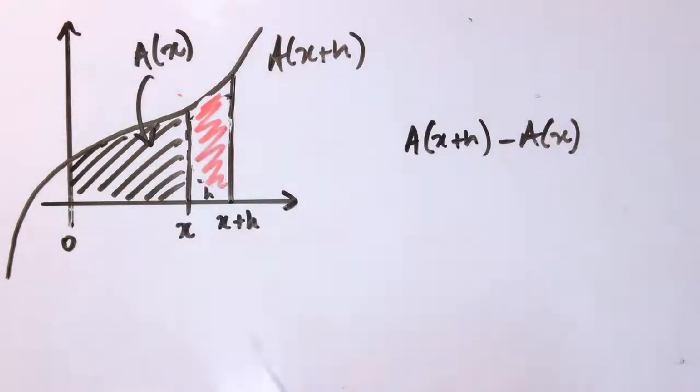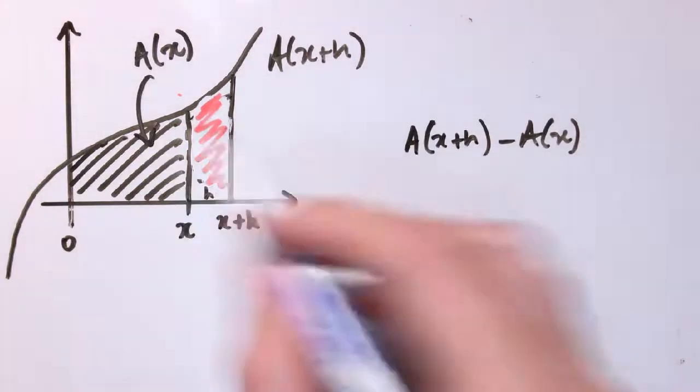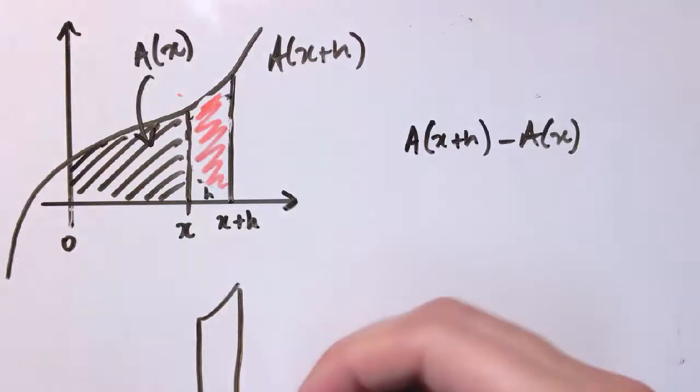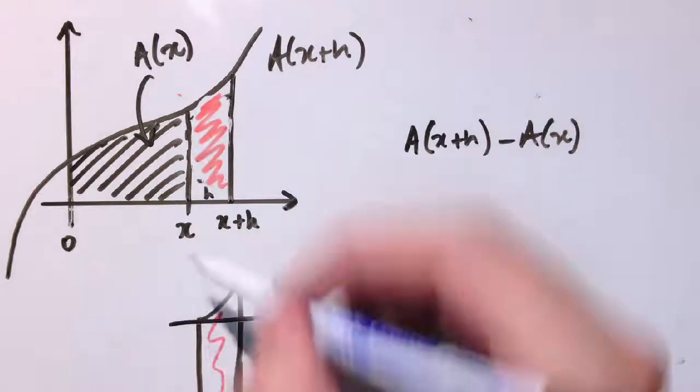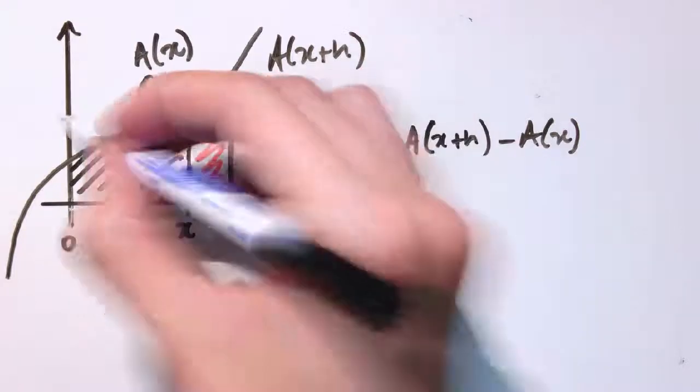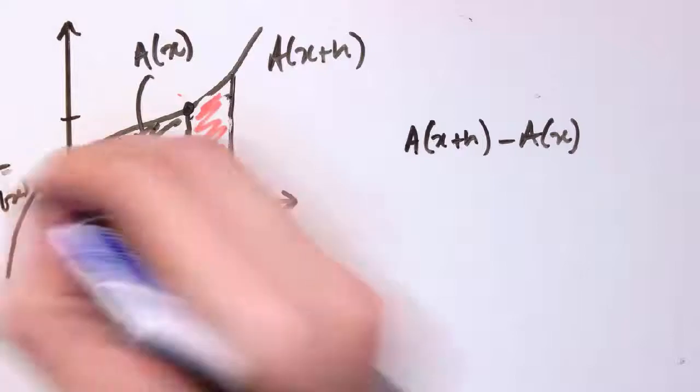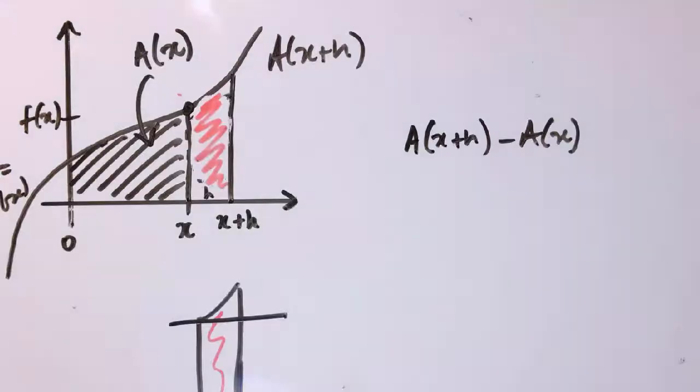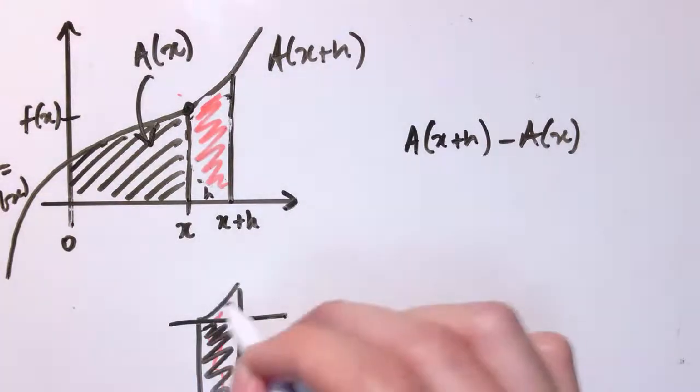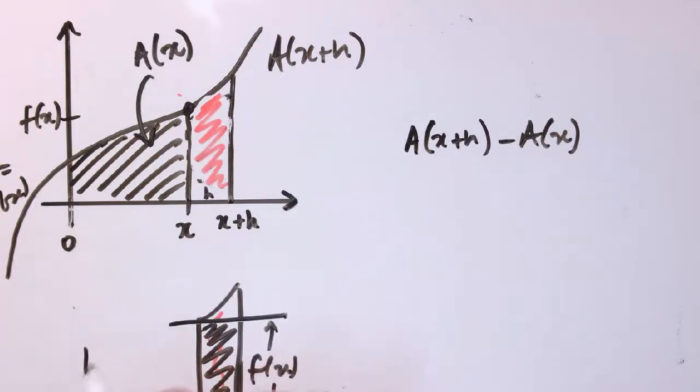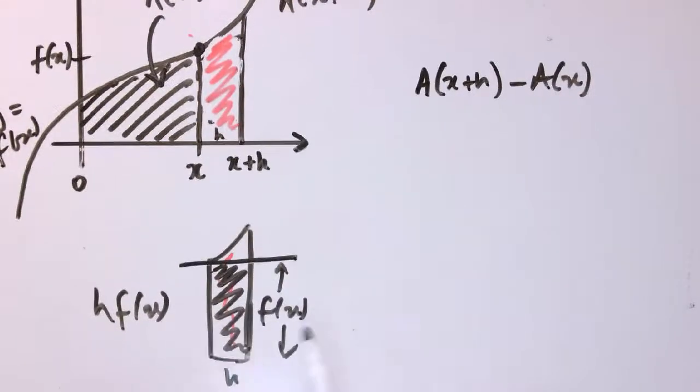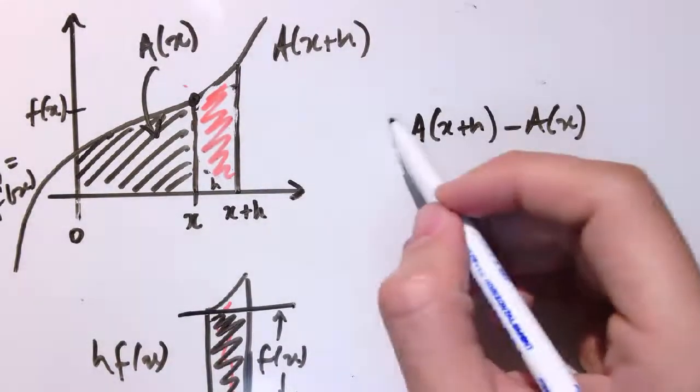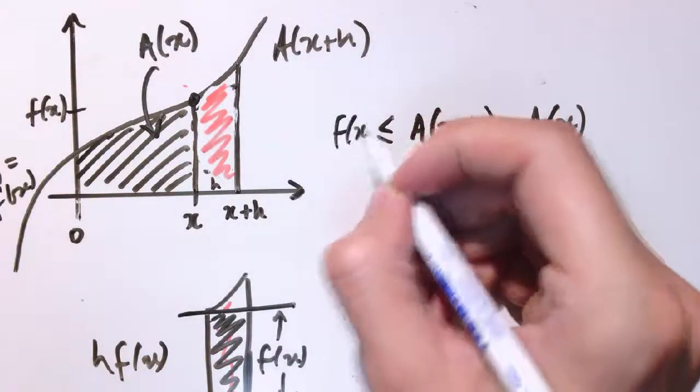And now I'm going to compare this to two rectangles. So if I just draw that section out again here, that's just a copy of the red section up there, it's got width h. And if I just cut it off at this point here, the y value here is just the value of the function here. So if this function, let's call it f of x, this y value would be f of x. So the area of just this rectangle here, ignoring this part here, would be h times f of x. And so the area that I've got here is larger than, is greater than or equal to f of x times h.